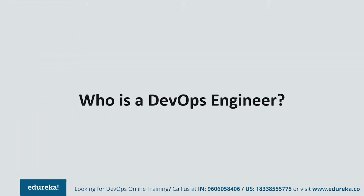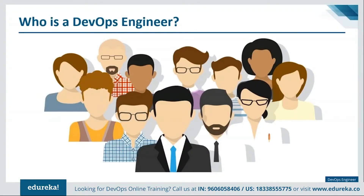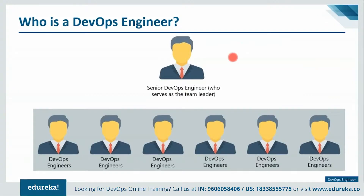A dedicated DevOps team consists of a few professionals who are each responsible for different elements. There are two main roles in the team: the senior DevOps engineer who serves as team leader, and the DevOps engineer. The senior DevOps engineer architects and plans the complete delivery process, including which tools will be used, and supervises the overall operations and understands the entire environment.